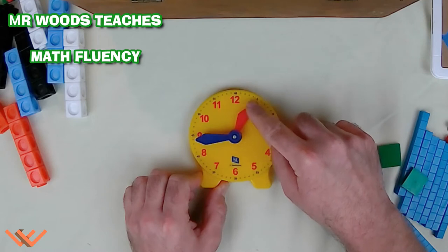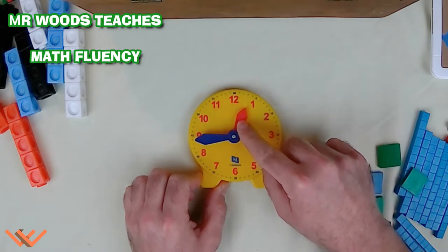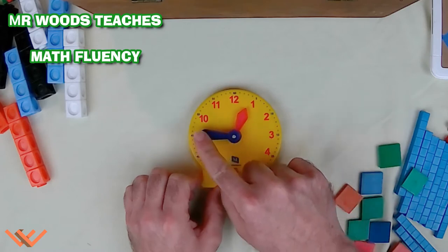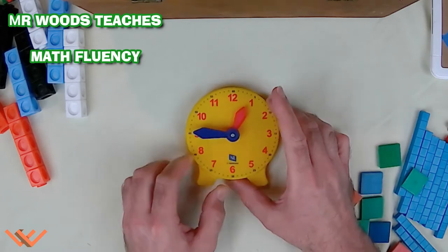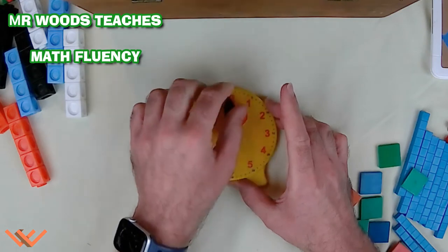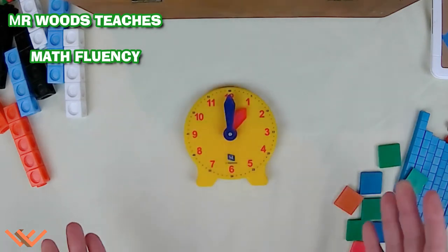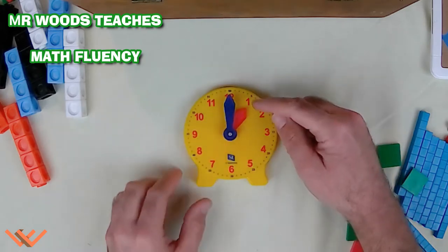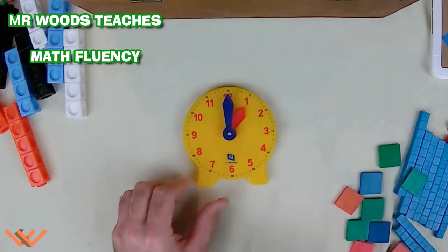So, the hour hand is the short or the small hand. And the minute hand is the long or the big hand. So, I'm moving around. I can say, okay, this is one o'clock. The minute hand is at the 12 and the hour hand is at the 1.